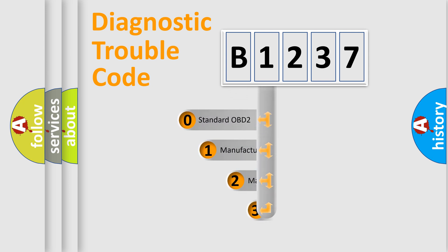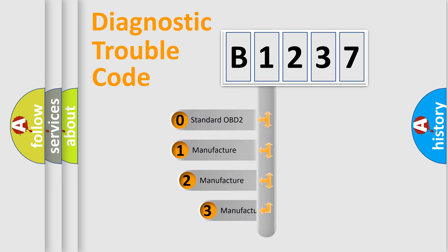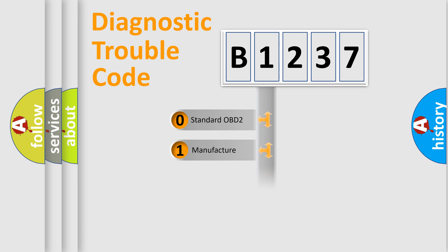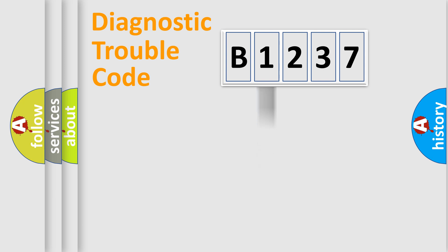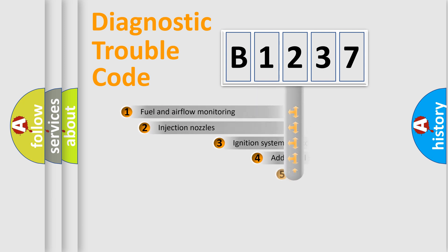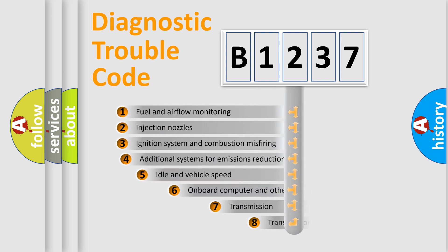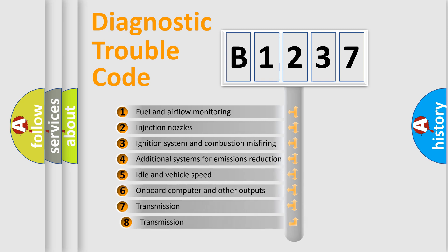This distribution is defined in the first character of the code. If the second character is expressed as zero, it is a standardized error. In the case of numbers 1, 2, or 3, it is a manufacturer-specific error expression.